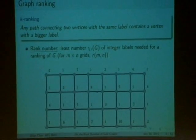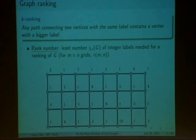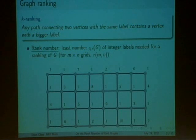Graph ranking, rather than labeling the vertices with colors, will label the vertices with different integer labels so that between any two vertices with the same label, each path will contain a vertex with a bigger label. For example, if we take this 4 by 8 graph, you can see that if we connect any two vertices with the same label with any path, it will always contain a bigger number. This is called a graph ranking.